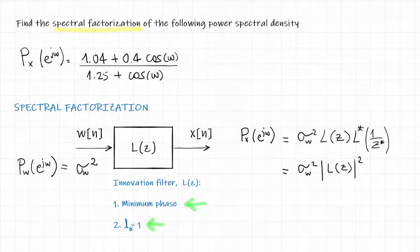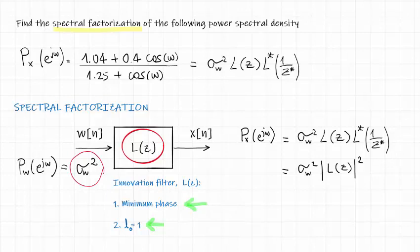So, in summary, finding the spectral factorization of a certain power spectral density means finding the innovation filter L and the variance of the input noise. In this way, we can decompose the power spectral density in this form. And if we focus the attention to systems with only real poles and zeros, we can also simplify this in this way.